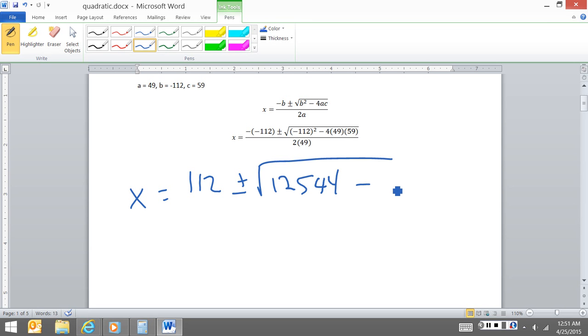And this is all over 2 times 49. And I can do this now because, of course, you do the top and the bottom separately. So this is 8. Next time I'm going to do my subtraction, 125, 44 minus 115, 64, and I'm left with 112 plus or minus 80 over 90.